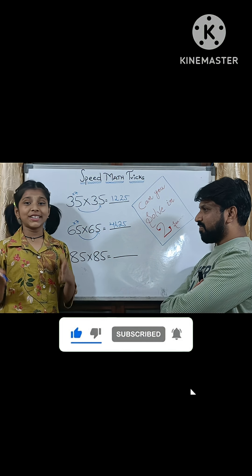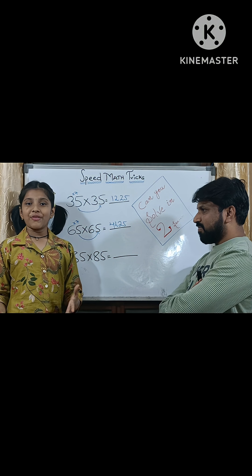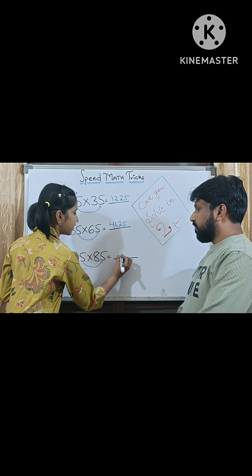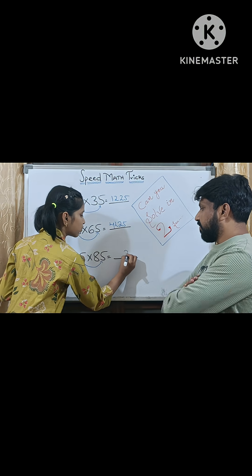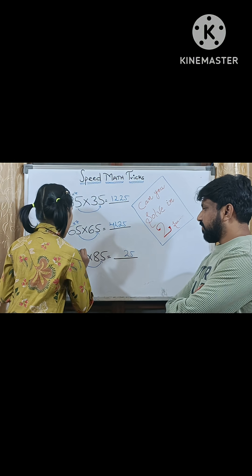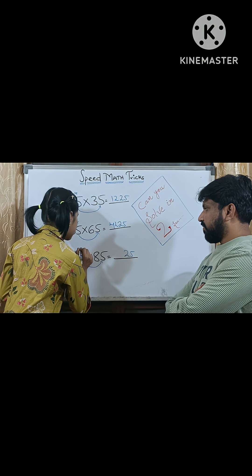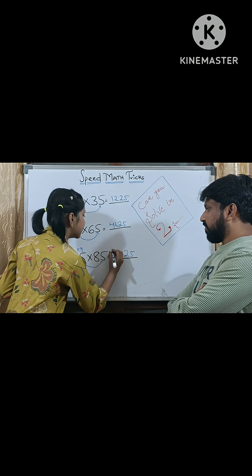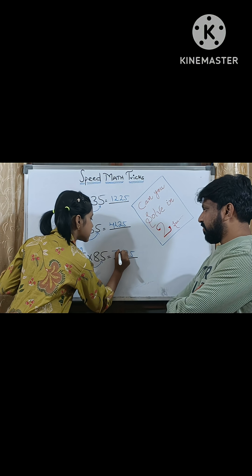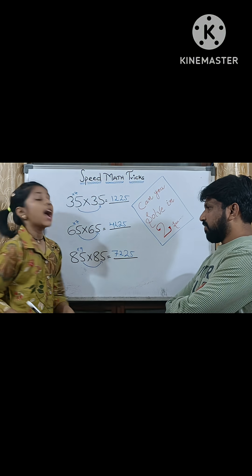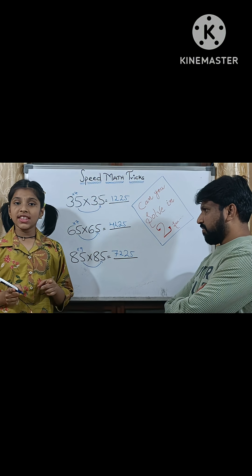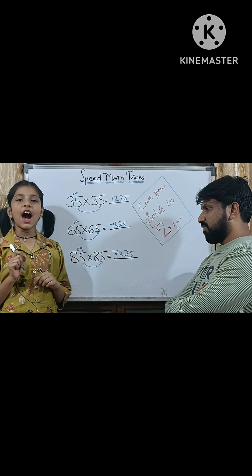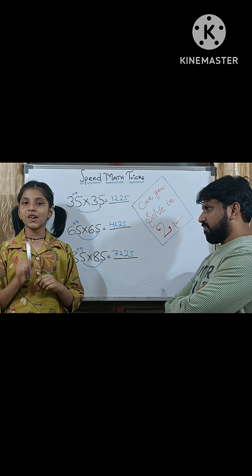4225, that's it. 5 multiplied by 5 is 25. The number after 8 is 9. 8 multiplied by 9 is 72. 7225, that's it. Now I will give you a sum.